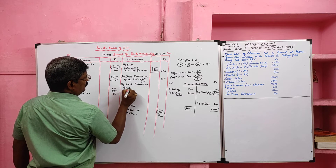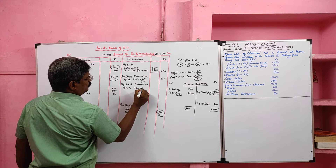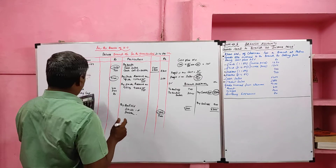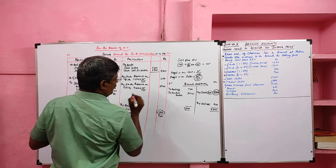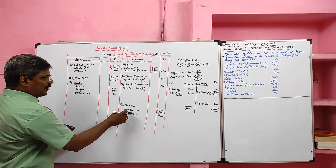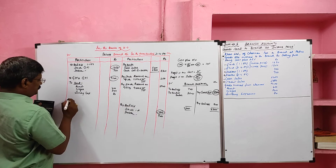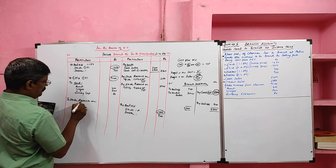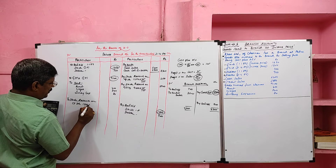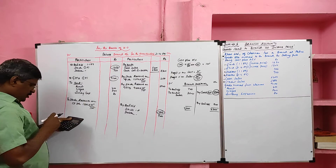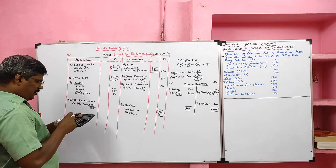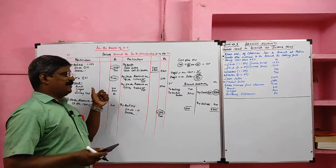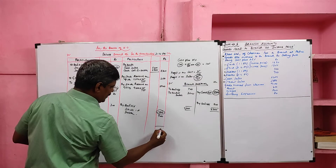Stock reserve on goods into branch: 9,100 multiplied by 25 by 125 equals 1,820. Likewise, stock reserve on closing stock: closing stock value 1,500 multiplied by 25 by 125 equals 300. If goods are returned to the head office, we also have to take stock reserve on that. Now balancing the branch account.